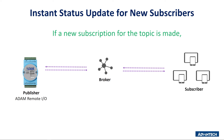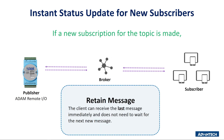The following is the retained message for instant status updates for new subscribers. The broker stores the last retained message. If a new client makes a subscription, the client can receive the last message immediately and does not need to wait for the next new message. This is a useful function for users who want to know the latest data from a long-interval IoT device right away.